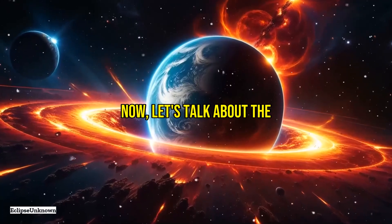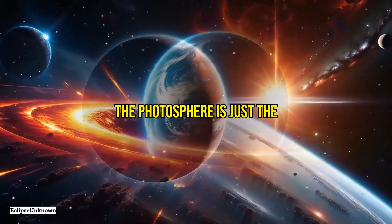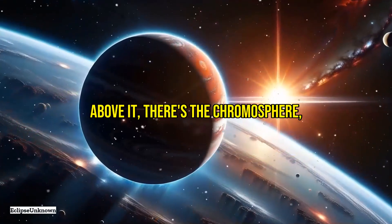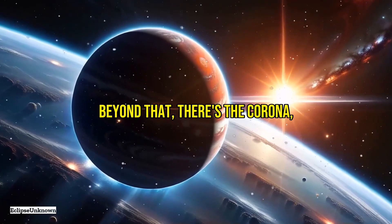Now, let's talk about the atmosphere of the sun, which consists of several layers. The photosphere is just the beginning. Above it, there's the chromosphere, a region where temperatures can rise to over 20,000 degrees Celsius.